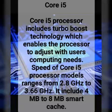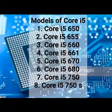This processor has 4 MB to 8 MB of cache memory. Core i5 has different models: 650, 655K, 660, 661, 670, 680, 750, and 750S.